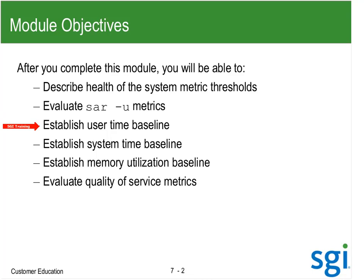In the later module on application memory, we're going to take a look at an application that strides through data in row-column versus column-row order and look at the time difference and TLB misses. Then I need to get my system time baseline. Most people think that if they have more than 10% system time, they'd like to know what's going on.